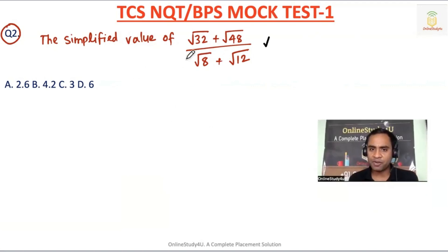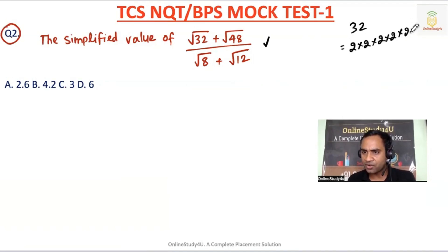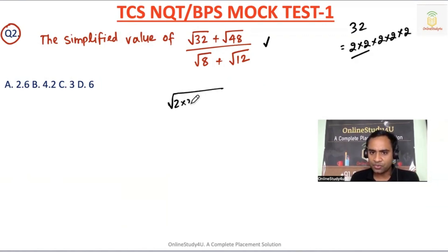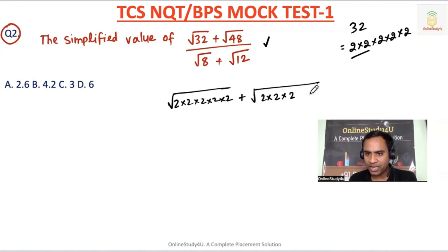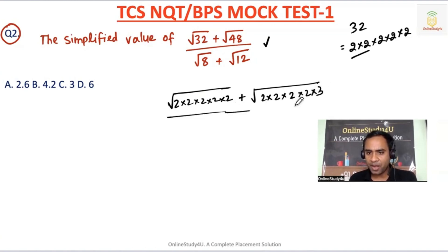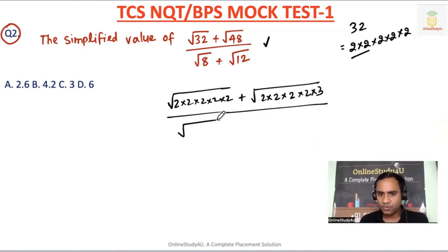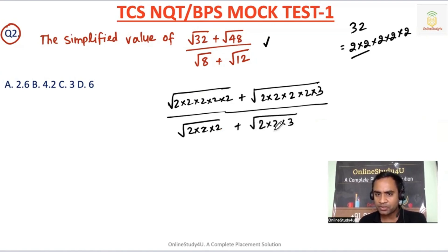For √32, calculate the prime factors: 2×2×2×2×2 = 32. For 48: 2×2×2×2×3 = 48. For 8: 2×2×2. For 12: 2×2×3. So √32 = √(16×2) = 4√2. √48 = √(16×3) = 4√3. √8 = √(4×2) = 2√2. √12 = √(4×3) = 2√3.